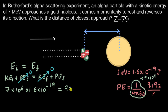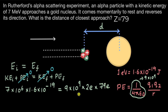Looking at the charge of the alpha particle: it has two protons, and the magnitude of charge on a proton equals that of an electron, which is E. So the total charge on the alpha nucleus is 2E. The total charge of the gold nucleus comes from its atomic number of 79, meaning there are 79 protons, giving a total charge of 79E. This 79E is divided by D. The charge of the electron E equals 1.6 × 10⁻¹⁹ coulombs, which we place at both positions in the equation.